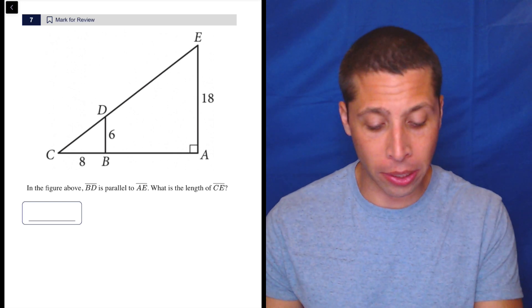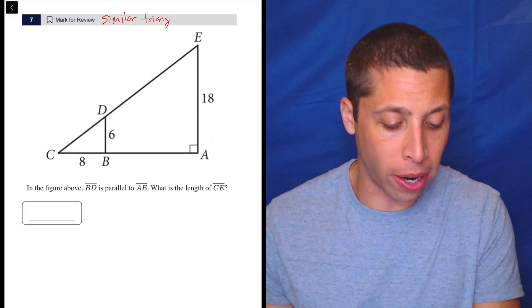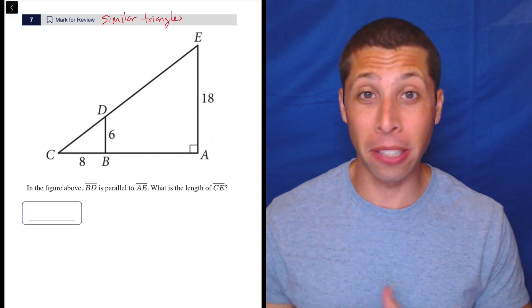The first thing we need to notice is this really is testing similar triangles. They never use that word anywhere. But anytime you see two triangles that are overlapping or sharing something, it's probably similar triangles.